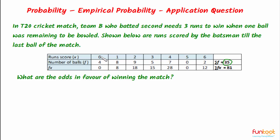To find how many runs the batsman had scored till the last ball, we find Σfx by multiplying values in the runs row with values in the balls row. So zero into four is zero, one into eight is eight, two into nine is eighteen, and likewise. Adding these values gives summation fx equal to 81, so 81 is the total runs scored by the batsman till the last ball.